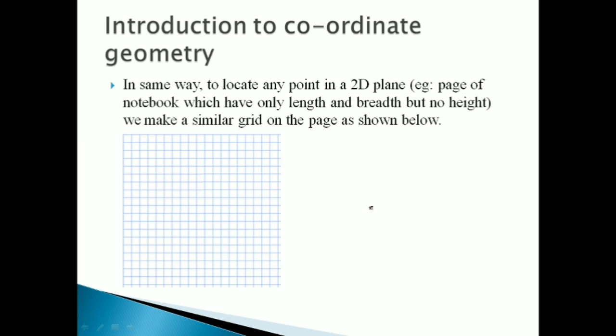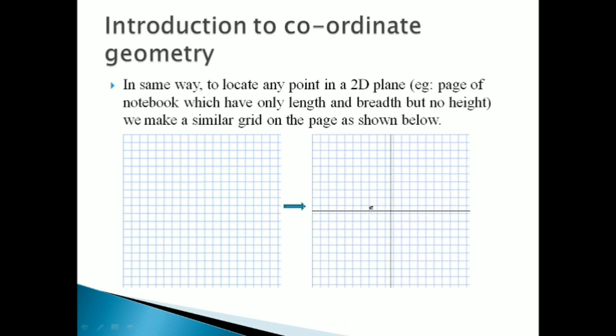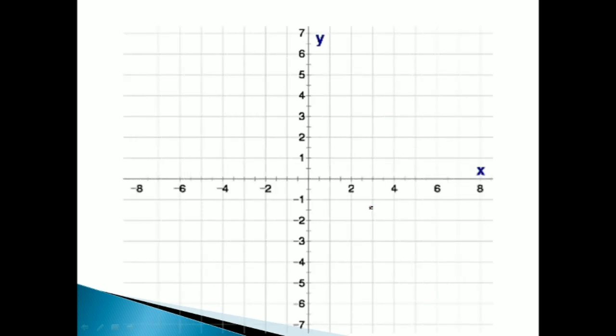उस grid पर दो major lines थीं — equator and prime meridian। Same ways, इस 2D plane के ऊपर भी हम दो axis बना देते हैं। Students, this is simply a graph paper जहाँ पर हम X axis और Y axis बनाते थे। Graph paper would be seen like this — एक horizontal X axis है, vertical Y axis है। X axis के right side पे positive numbers हैं, left side पे negative numbers हैं, upwards Y axis पे positive numbers हैं, and downwards Y axis पे negative numbers हैं। इस 2D plane को X axis और Y axis से track करने की कोशिश की है। For example, the intersection of X and Y axis — यह बहुत ही special point है।